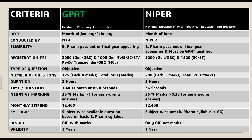In GPAT, there are 125 questions. Each question carries 4 marks, for a total of 500 marks. In NIPER, there are 200 questions. Each question carries 1 mark, for a total of 200 marks.